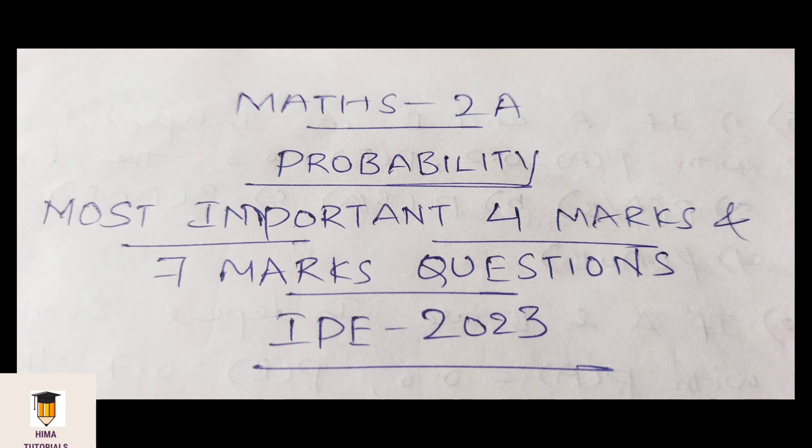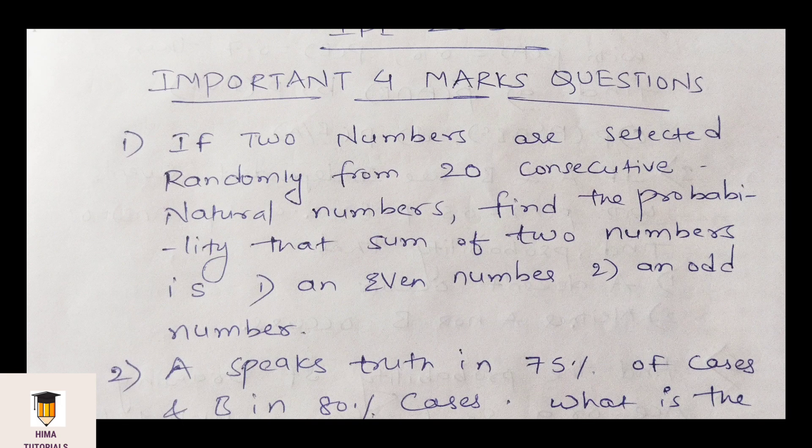In probability, we will get 2 four-mark questions and 1 seven-mark question. That means we will score a total of 15 marks from this chapter. Now we will see the most important 4-mark questions in this chapter. Please make a note of it.